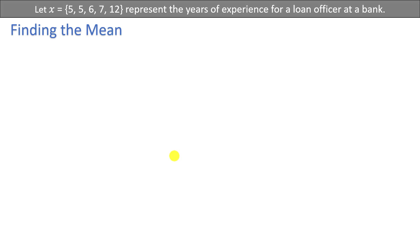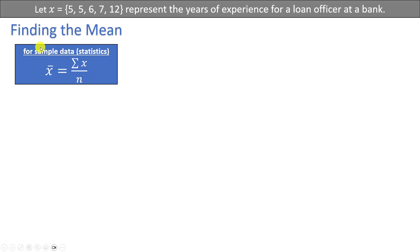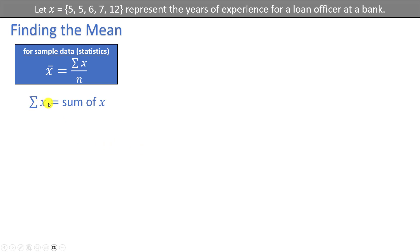We would like a more mathematical representation of this definition. In formula form, if we want to find the mean for sample data — which would be a statistic because statistics are based on samples — we use the symbol X-bar to represent the mean. To find the mean, we add up all the values in the data set, represented by the sum of X (sigma X), and divide by the sample size, represented by lowercase n. The Greek uppercase letter sigma tells us to add up whatever follows it.